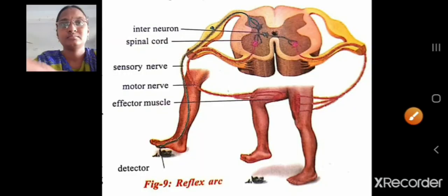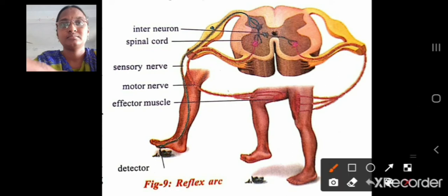Children, let us see various parts involved in reflex arc. The spinal cord, sensory nerve, motor nerve, interneuron which connects the sensory nerve and motor nerve.